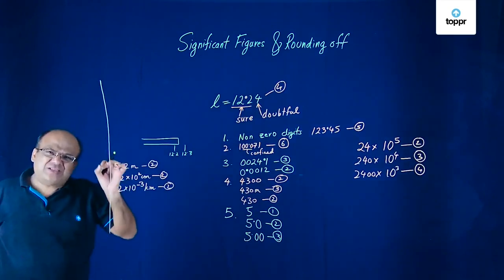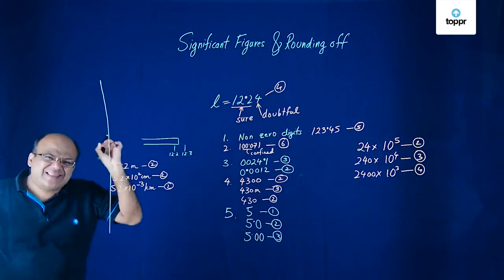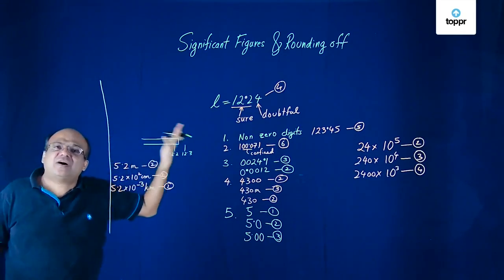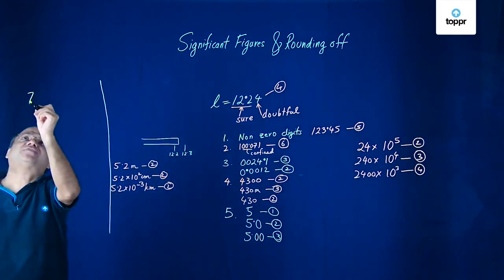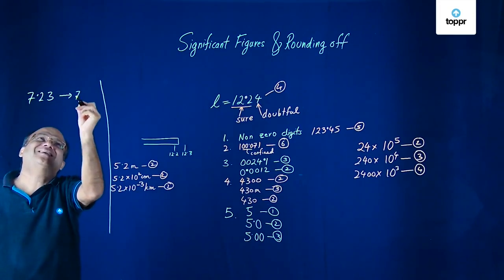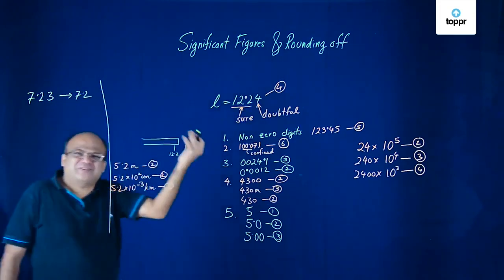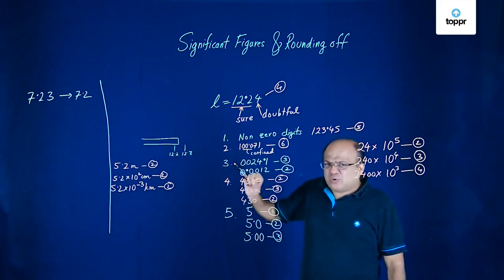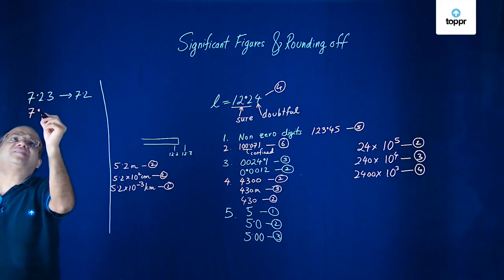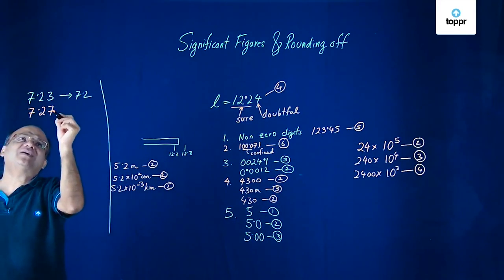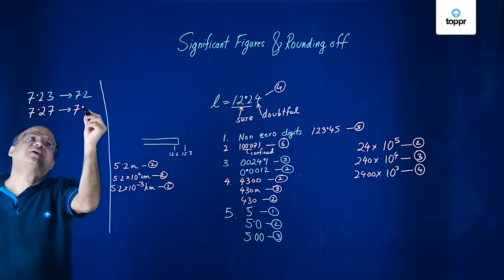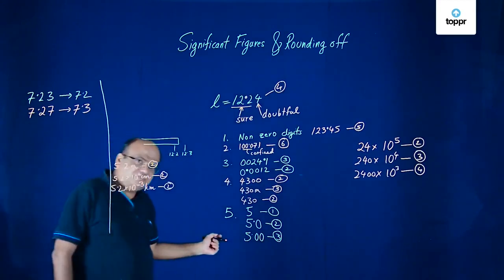First rule: if the digit to be dropped is less than 5, then the preceding digit is left unchanged. Suppose you have to round off 7.23 to 1 decimal place — you get 7.2. That everyone knows. Next rule: if the digit to be dropped is more than 5, the preceding digit is increased by 1. So 7.27 up to 1 decimal place will become 7.3.